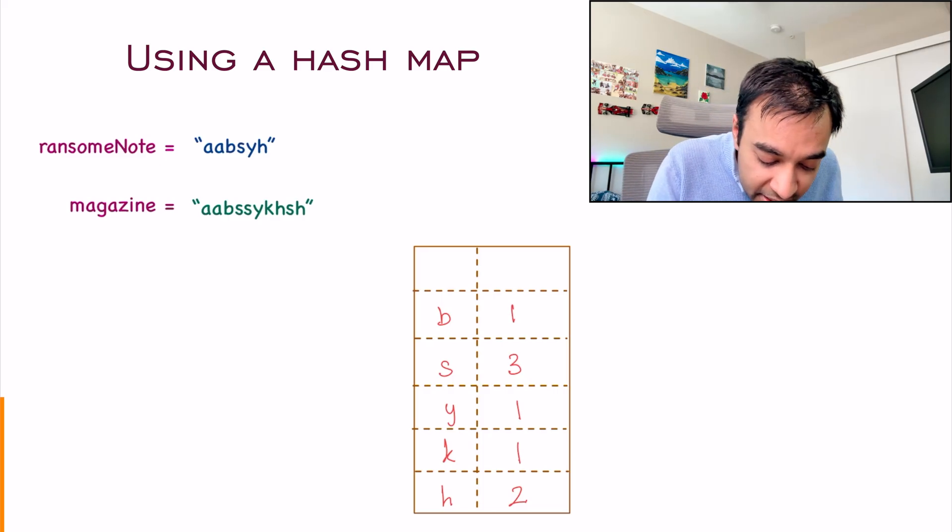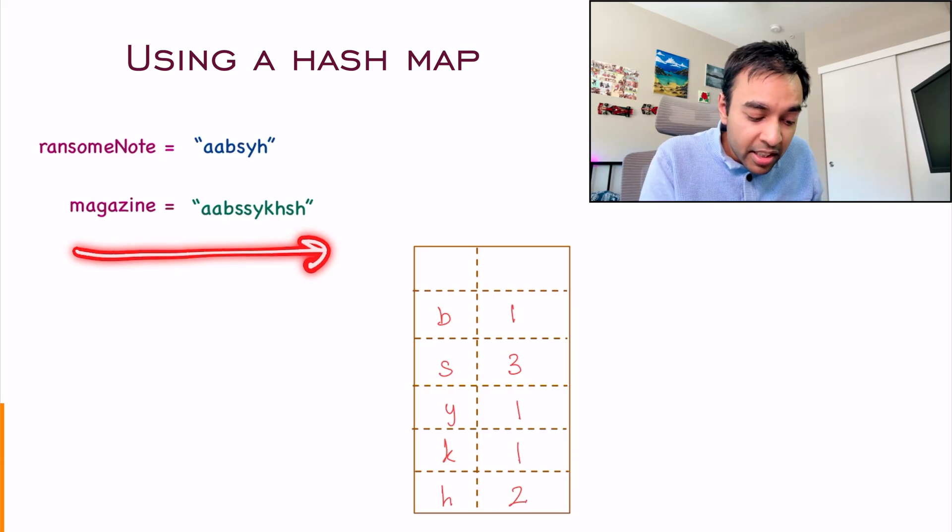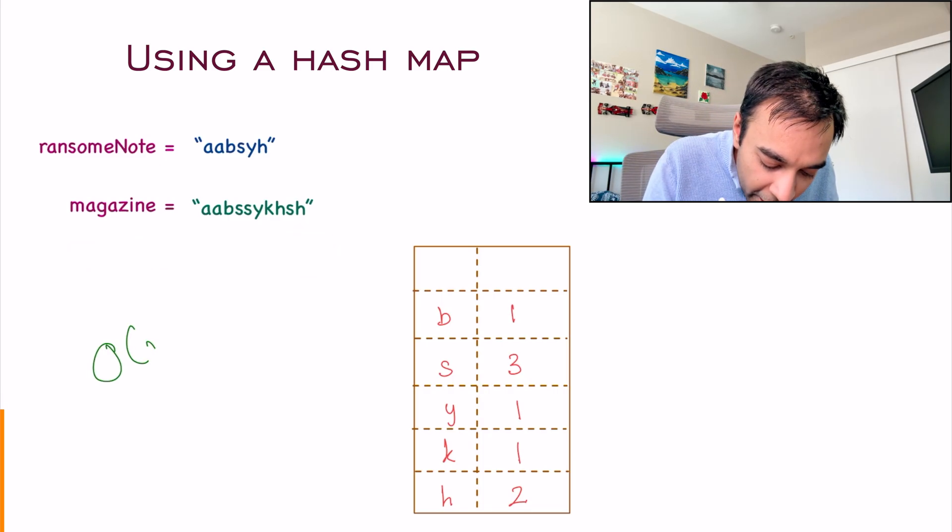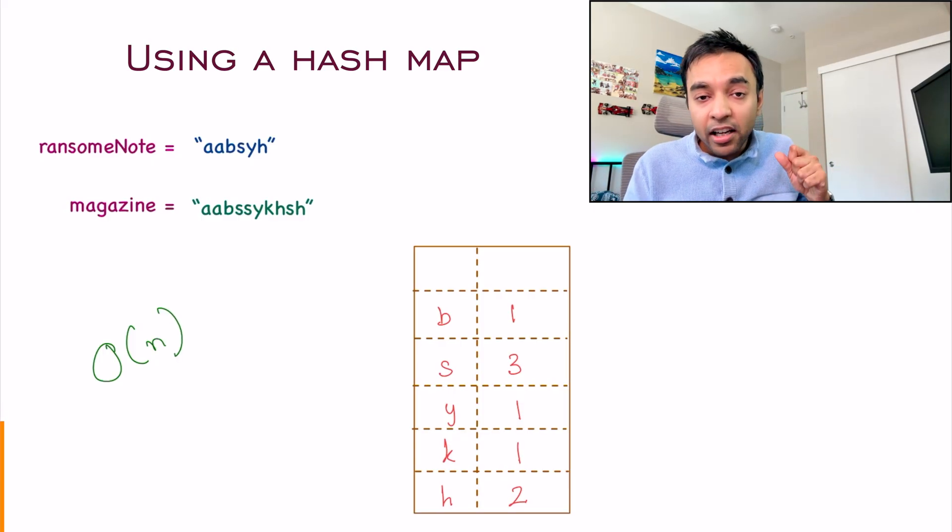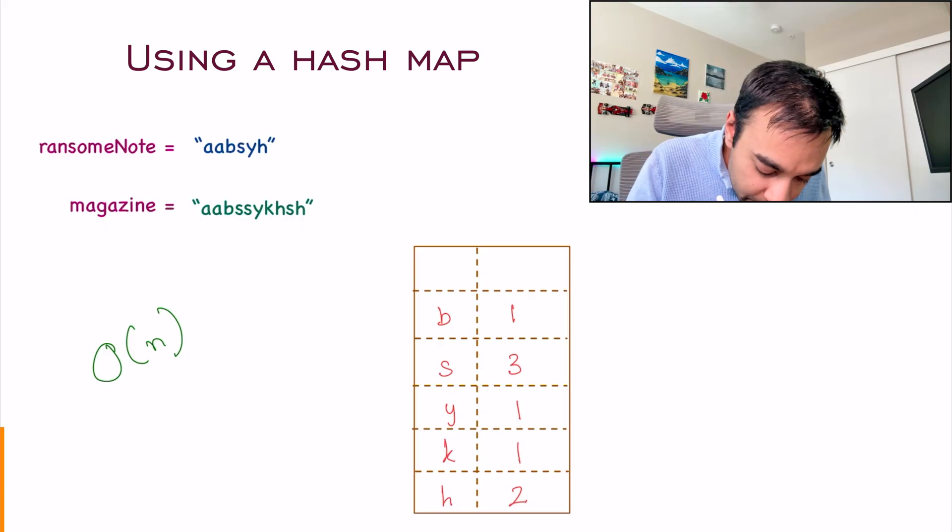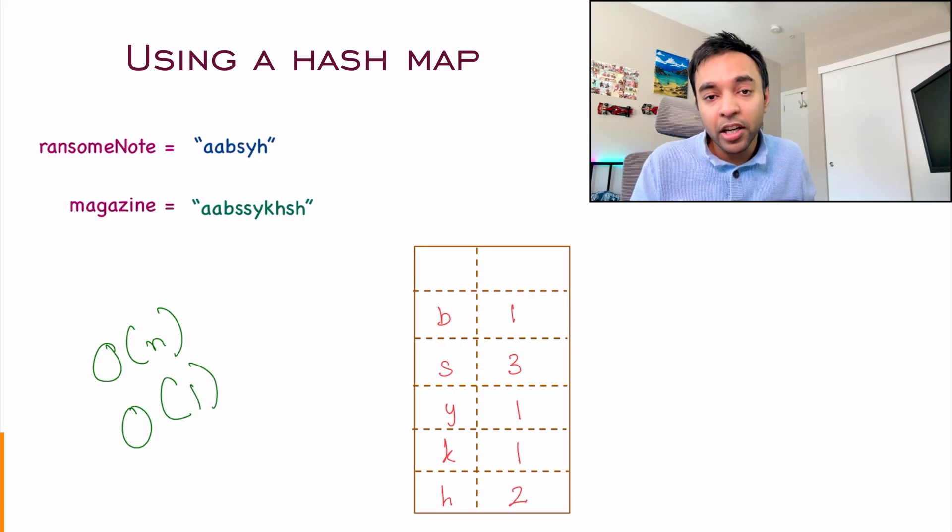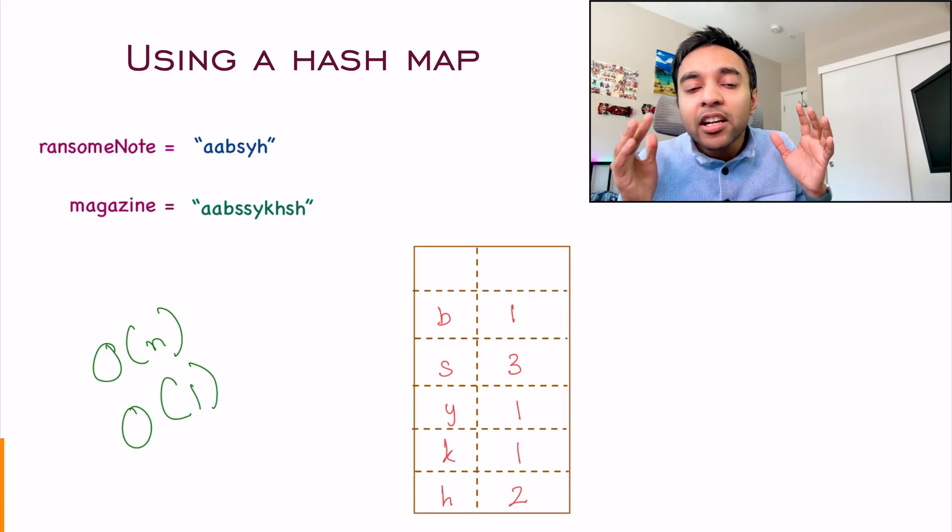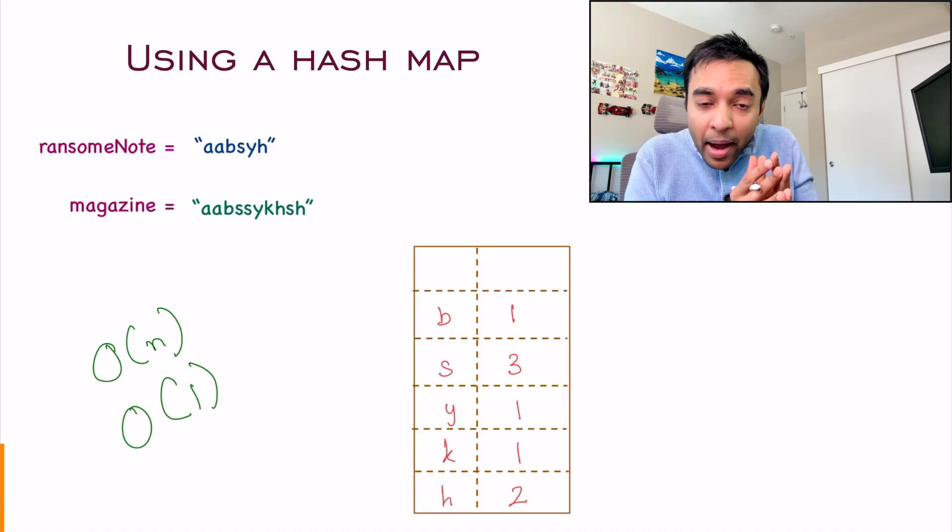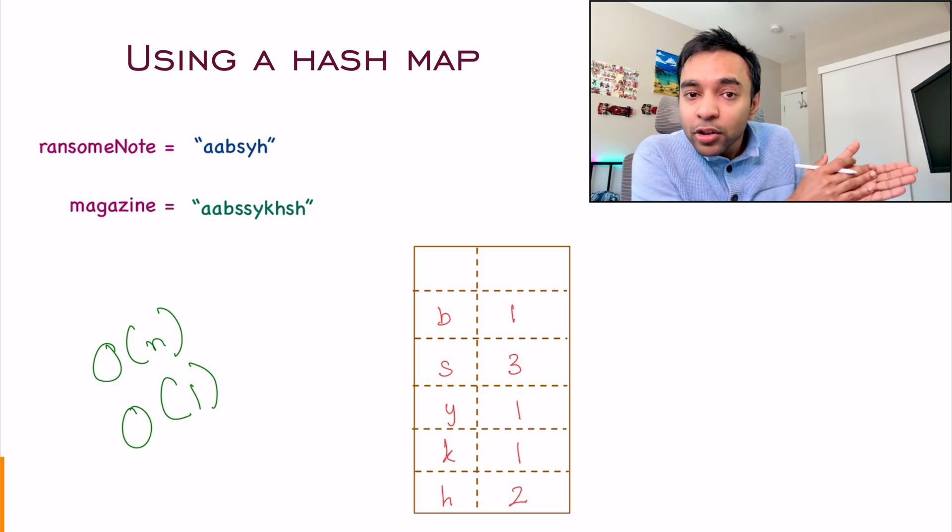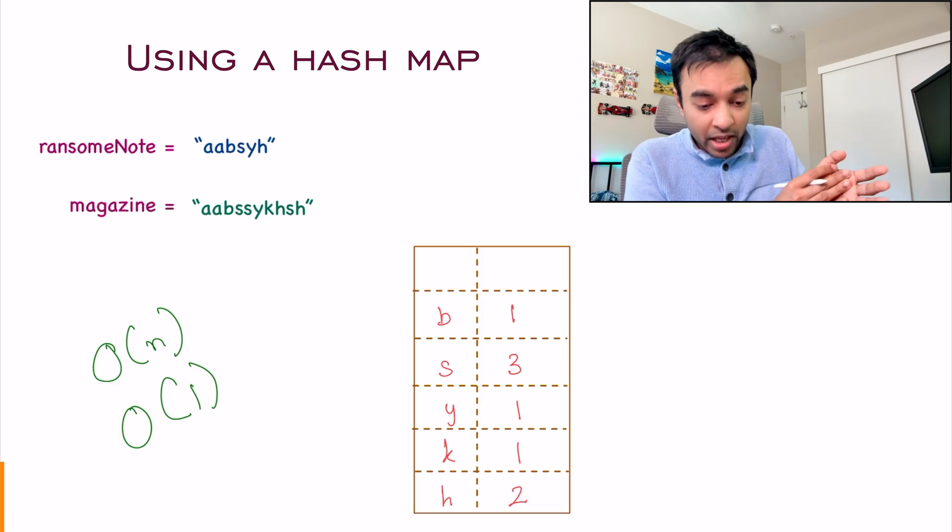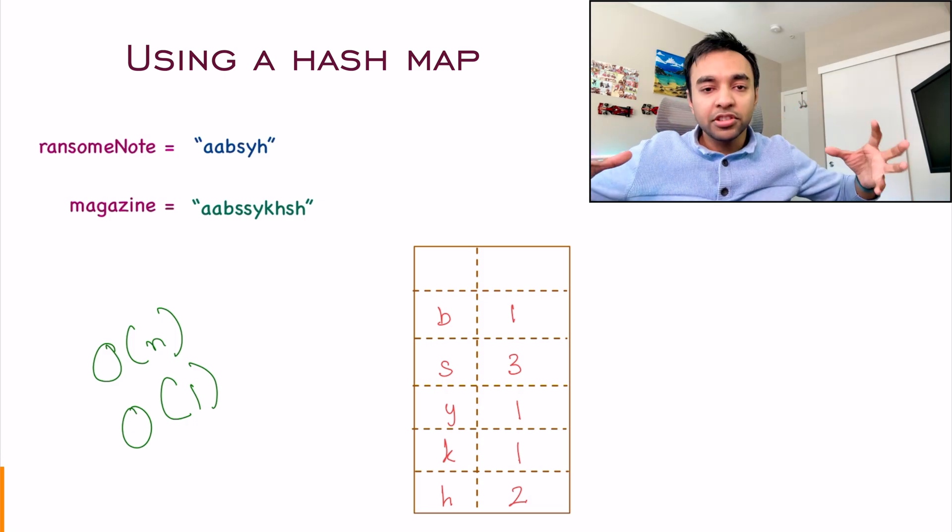What is the time complexity? Since you iterate over the string only once, the time complexity will be order of n, where n is the length of your larger string. And what will be the space complexity? The space complexity will again be order of 1. Because no matter what is the input size, the maximum size of your hash map can be only 26 rows. That is the length of the English alphabet. So once again, it is constant space.